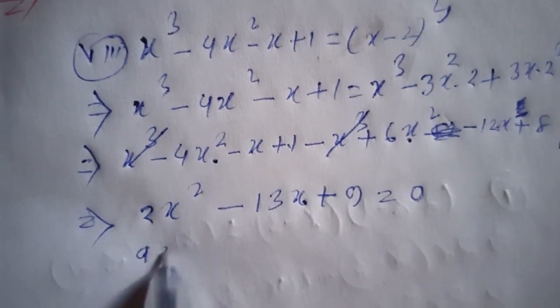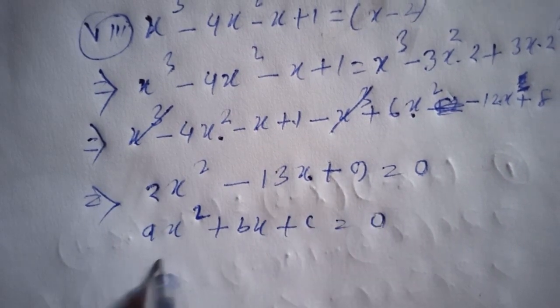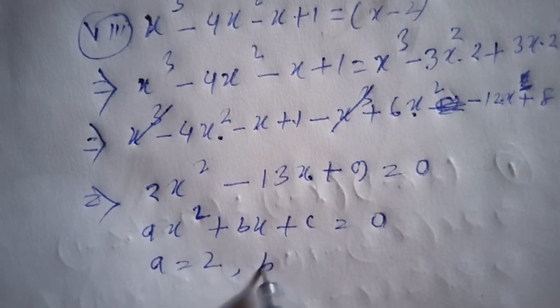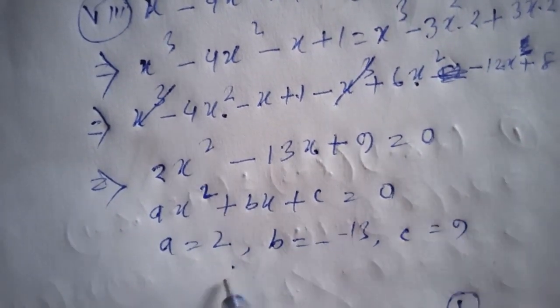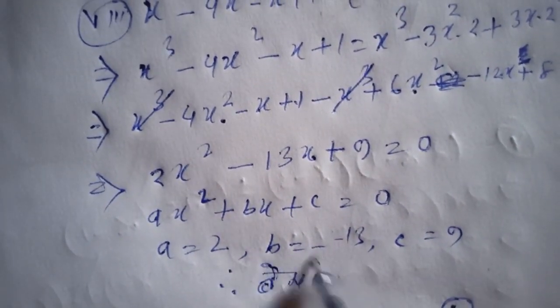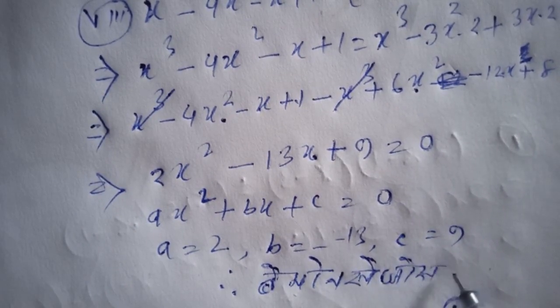Comparing with the general form ax squared plus bx plus c equals 0, we identify the coefficients: a equals 2, b equals certain value, and c equals 9.